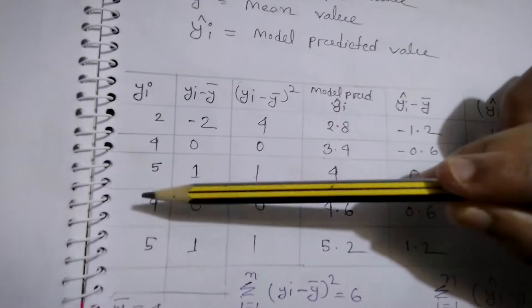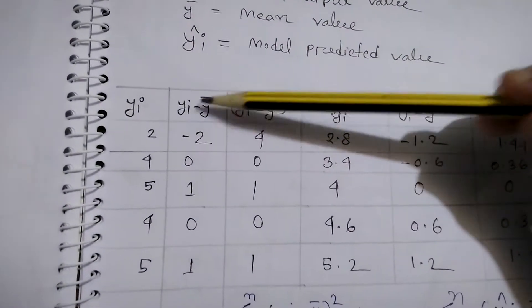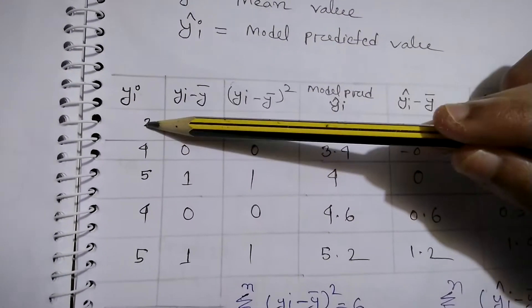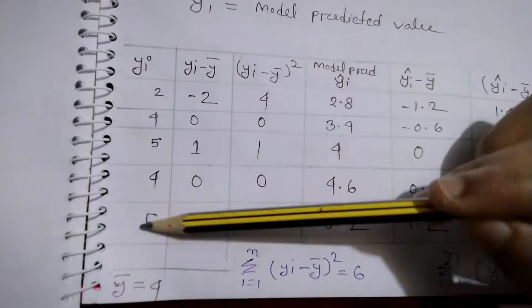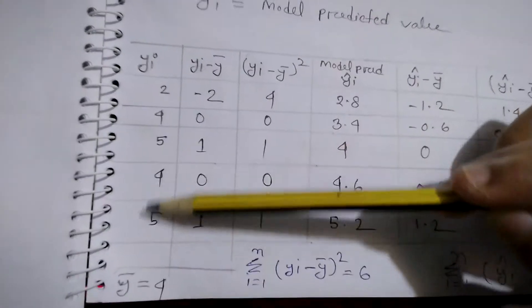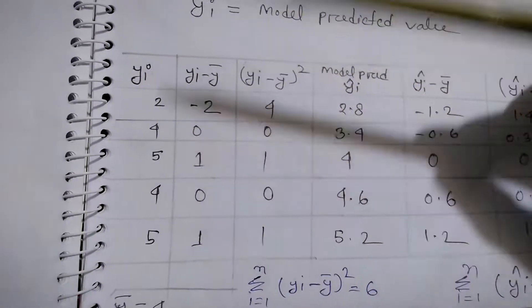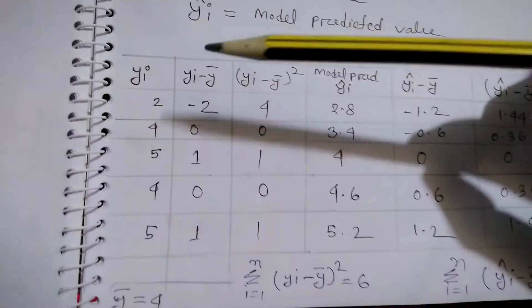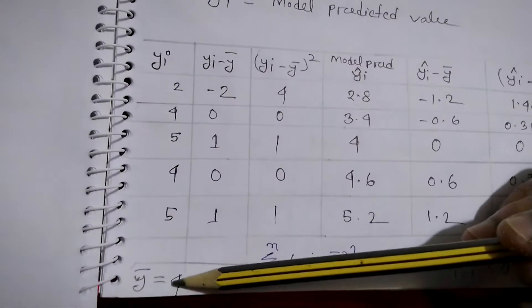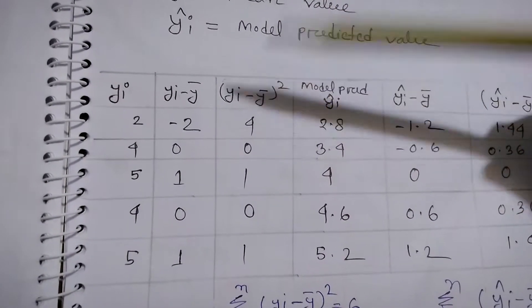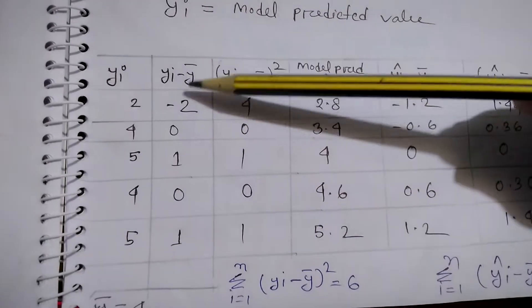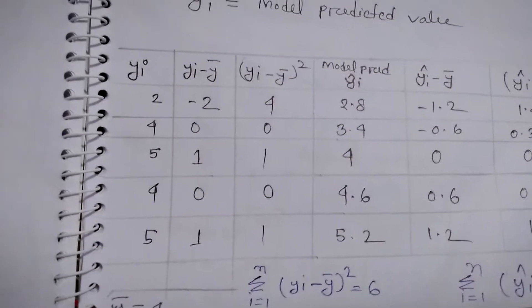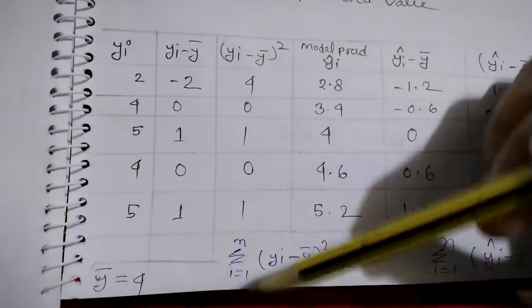For example, suppose our actual dataset yᵢ is: 2, 4, 5, 4, and 5. The mean ȳ equals the sum of all values divided by the number of items — that gives ȳ = 4. Then we find the differences: 2 minus 4 is -2, 4 minus 4 is 0, and so on. We square those differences so we don't get negative values. The squared differences are: 4, 0, 1, 0, 1.